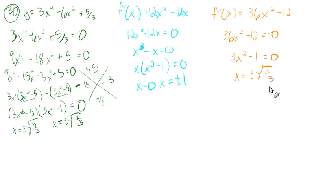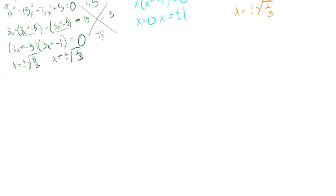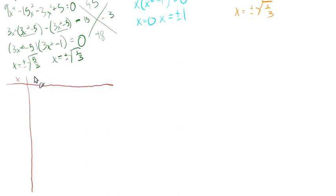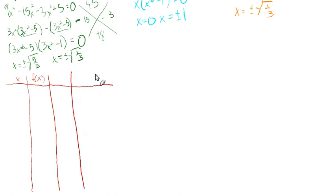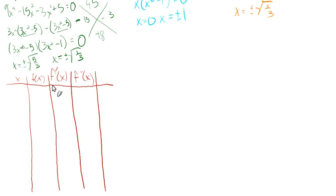Notably, the x-intercepts at ±√(1/3) coincide with the possible points of inflection. The book's solution doesn't include x-intercepts in the chart; the more important things are points of inflection and extrema. Our key x-values are: ±1 (from f′=0), 0 (from f′=0), and ±√(1/3) (from f″=0).